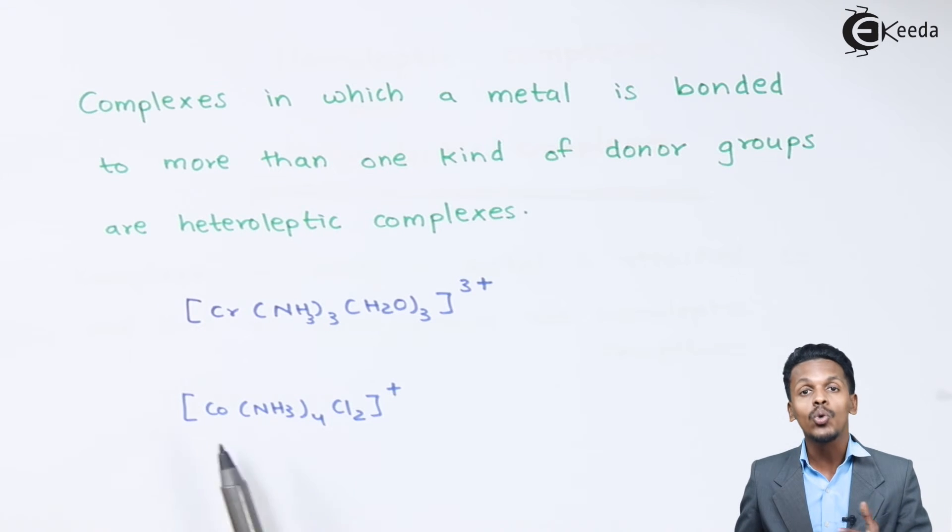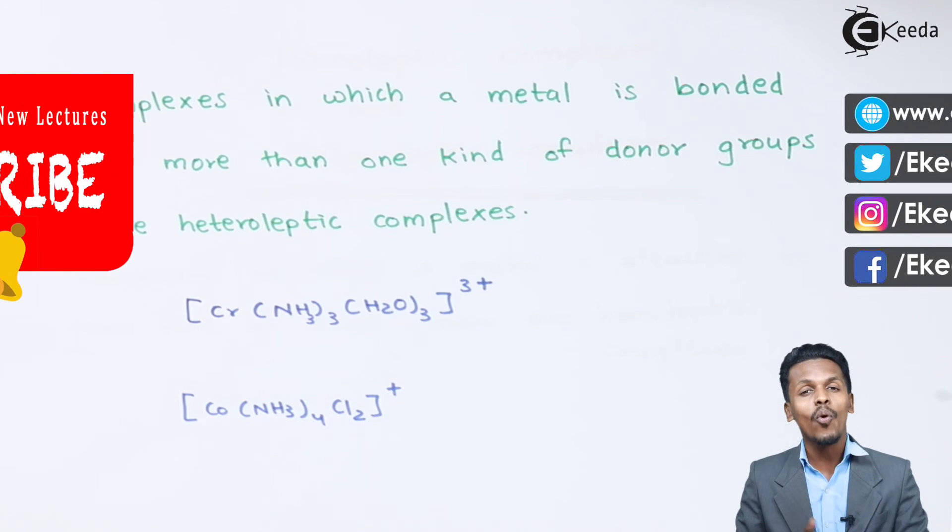And that's the reason this complex, where we can find two different donor atoms, are basically known as heteroleptic complex. So this was a brief introduction about homoleptic and heteroleptic complexes, and that's it.